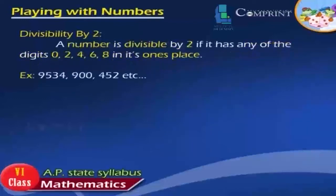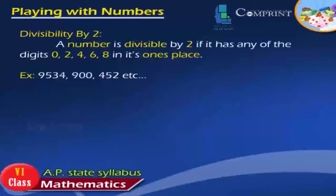Divisibility by 2: A number is divisible by 2 if it has any of the digits 0, 2, 4, 6, or 8 in its ones place. Examples: 9534, 900, 452, etc.